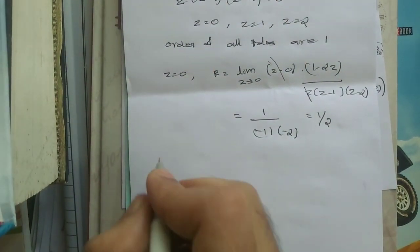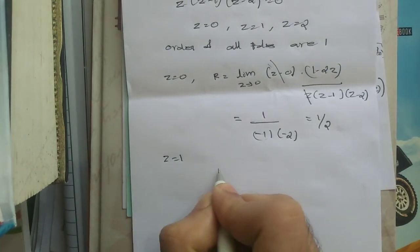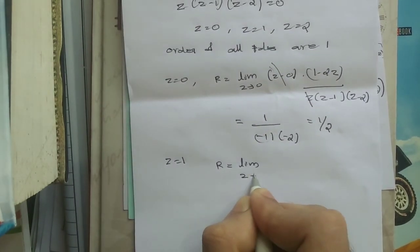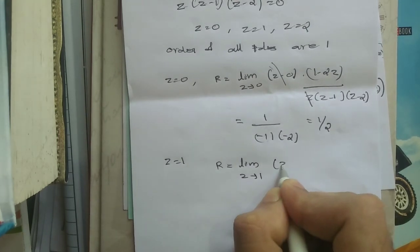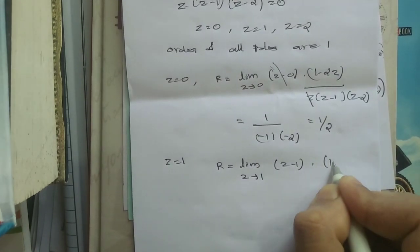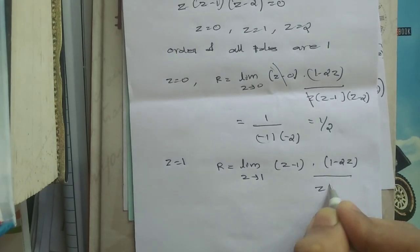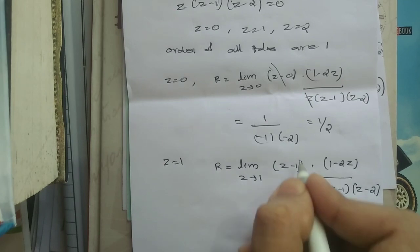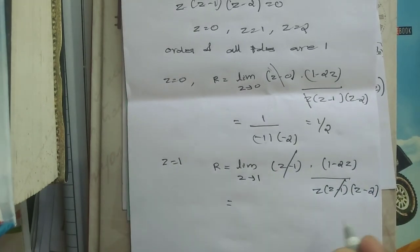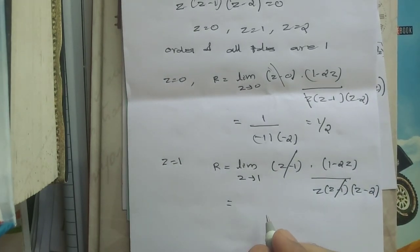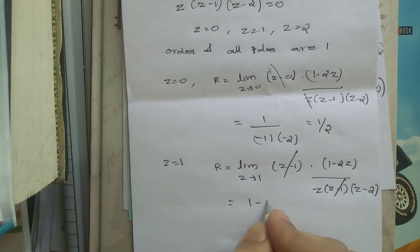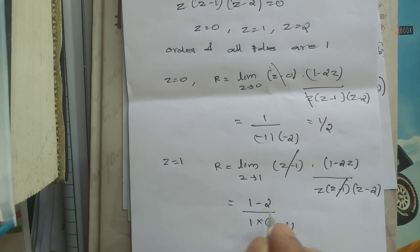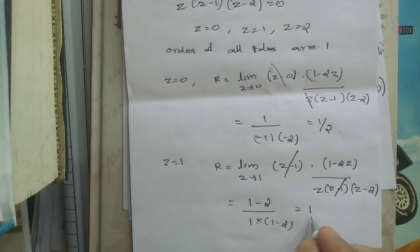For z = 1, the residue is R = limit as z → 1 of (z − 1) · (1 − 2z) / [z(z−1)(z−2)]. The (z−1) terms cancel, and substituting z = 1 gives (1 − 2) / [1 · (1 − 2)] = (−1)/(−1) = 1.